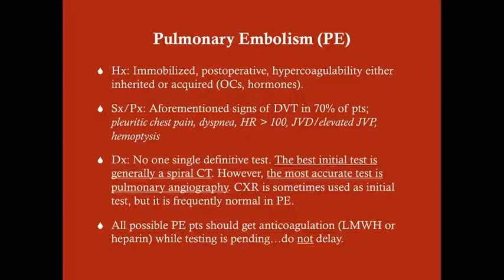The most common symptom of pulmonary embolism is tachypnea, occurring in 96% of patients. Tachycardia is also seen commonly, in about 44% of patients. Pleuritic chest pain is quite common as well and usually comes on suddenly. Remember, pleuritic chest pain is chest pain when you breathe — it's abated by keeping the diaphragm still and made worse by deep breaths. Elevated jugular venous pressure or jugular venous distension is also commonly seen.